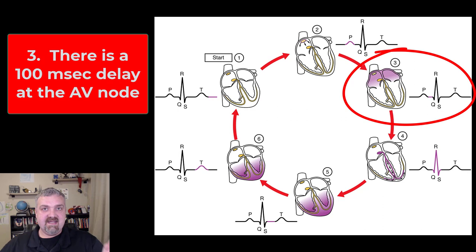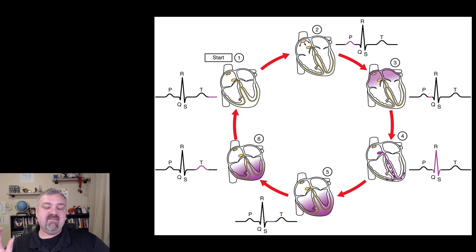So now we're at step three and this is a very important one. There's a delay of 100 milliseconds. It goes SA node to AV node, atrioventricular node, but then there's a delay of 100 milliseconds. The reason that delay is so important is because that's what allows the atria to have time to contract before the ventricles get depolarized. So it's very, very important.